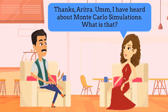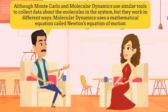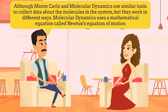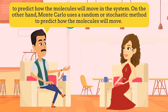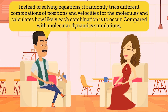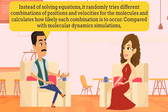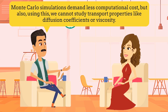I have heard about Monte Carlo simulations. What is that? Although Monte Carlo and Molecular Dynamics use similar tools to collect data about the molecules in the system, they work in different ways. Molecular Dynamics uses Newton's Equation of Motion to predict how the molecules will move in the system. On the other hand, Monte Carlo uses a random or stochastic method — instead of solving equations, it randomly tries different combinations of positions and velocities for the molecules and calculates how likely each combination is to occur. Compared with Molecular Dynamics simulations, Monte Carlo simulations demand less computational cost, but using this we cannot study transport properties like diffusion coefficients or viscosity.